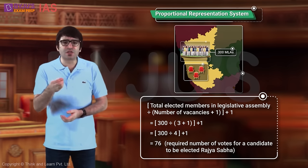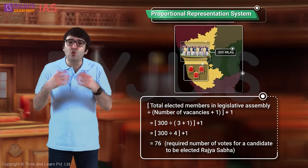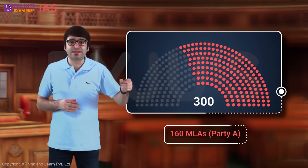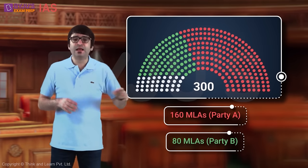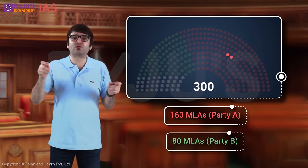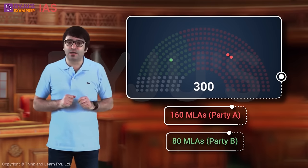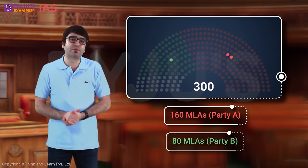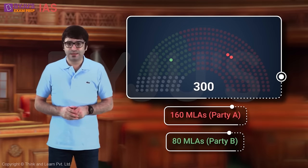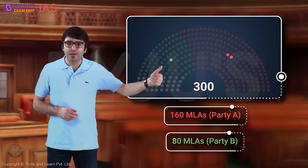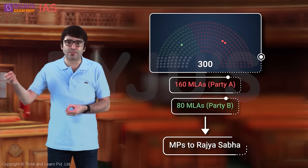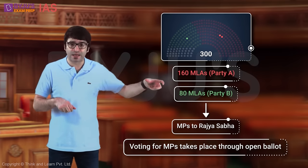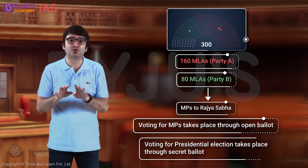In Rajya Sabha elections, we follow a system of proportional representation. Out of 300 MLAs, if Party A has 160 MLAs and Party B has 80 MLAs, at least two members from Party A and at least one from Party B will go to Rajya Sabha. Voting takes place through open ballot — MLAs come and vote, displaying their preferences. This contrasts with the presidential election, where voting is through secret ballot.